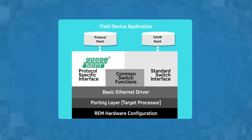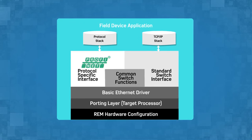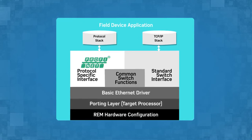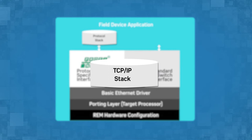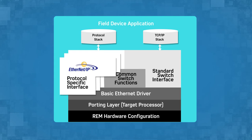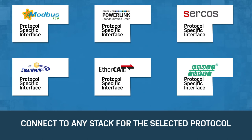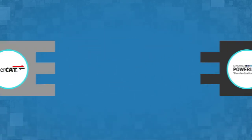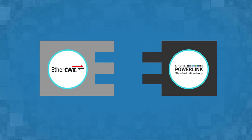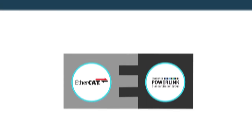Unlike other standalone switches that leave protocol up to the user, the FIDO 5000 REM switch comes with a driver for each protocol to easily configure the switch and integrate the protocol stack. The TCP/IP stack can be integrated once since it uses a common set of standard switch interface APIs. The driver's protocol-specific interface APIs then connect to any stack for the selected protocol. While EtherCAT and Powerlink do not technically use a switch, the FIDO 5000 can be configured to meet all the performance and connectivity requirements for these protocols.